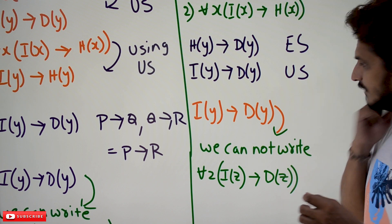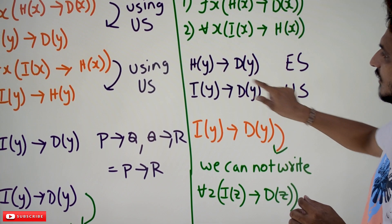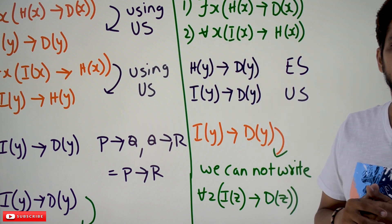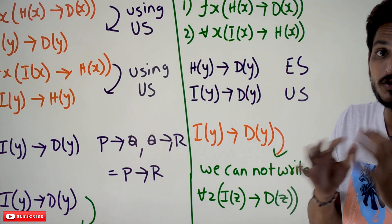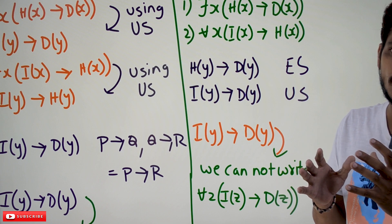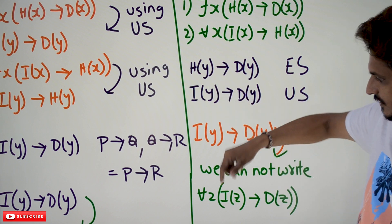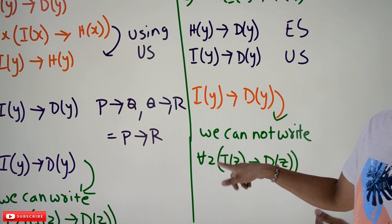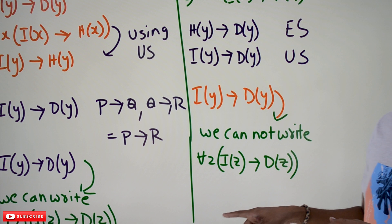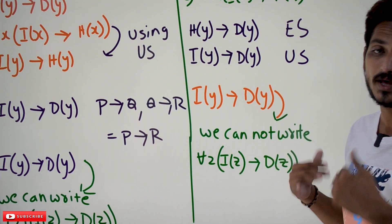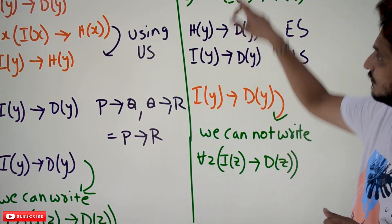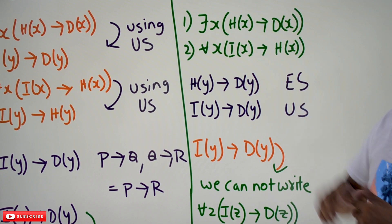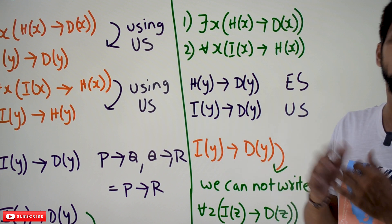Why can we not write it? Because this y is a free variable from our previous derivation, and this variable came from 'there exists.' The meaning of 'there exists' is only few of them are going to be true — not all. So can you use this variable to write 'for all'? No, we cannot use this variable y for concluding for all z, i(z) implies d(z). This is one case where we cannot apply universal generalization, because y is a free variable derived from existential specification.